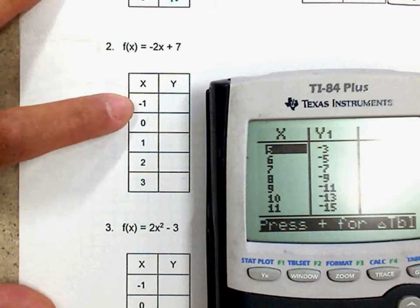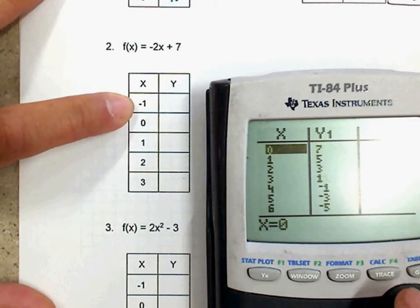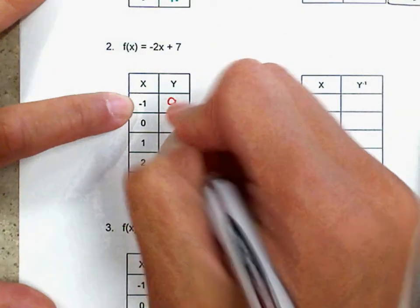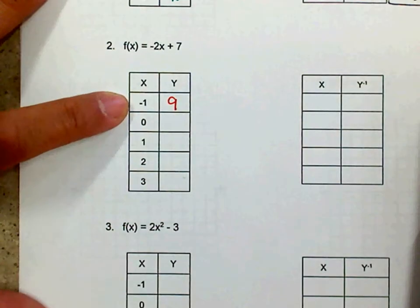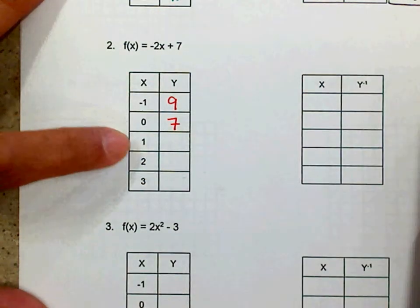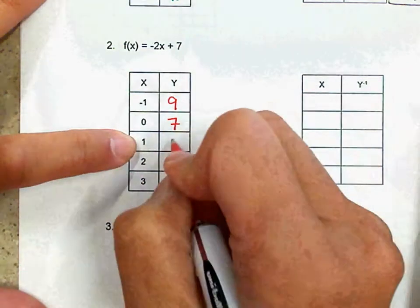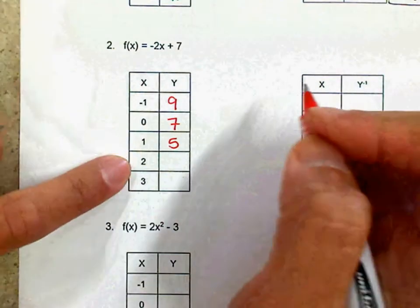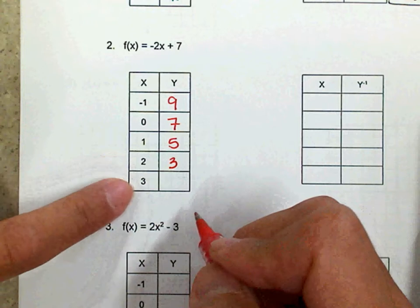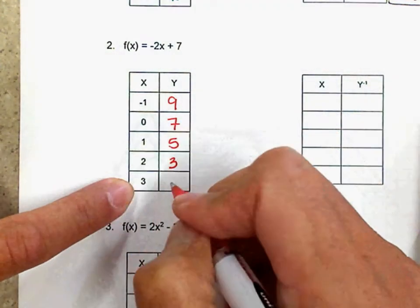Here we go. Okay. Go to negative one. When x is negative one, what is your y? Nine. When x is zero, what is your y? Seven. When x is one, what is your y? Five. When x is two, what is your y? Three. When x is three, what is your y? One.